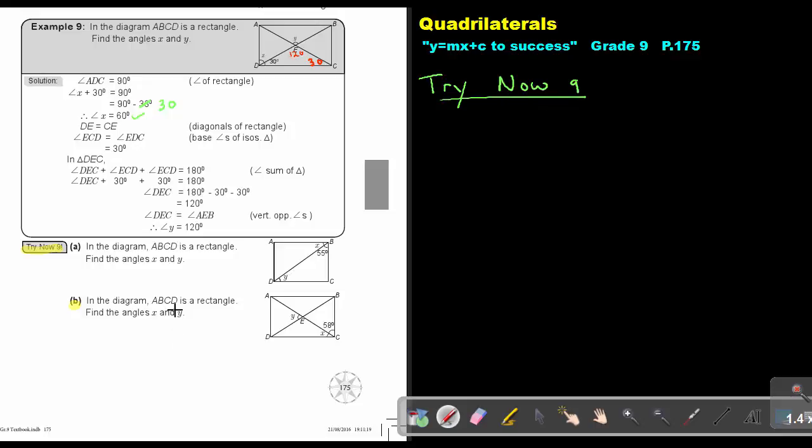In the diagram, ABCD is a rectangle. Find the angles X and Y. So if we look at this, let's start with that one. That's example 9 and it's B.